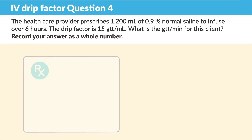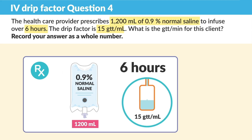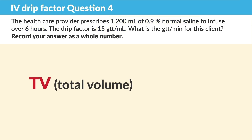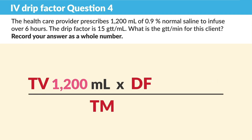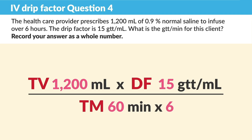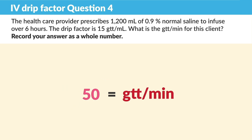Question number four: the healthcare provider prescribes 1,200 mLs of normal saline to infuse over six hours — key term, six hours is not 60 minutes. What is the drips per minute? Set up your formula: TV makes you deaf over time. Total volume is 1,200, drips are 15, but the time is six hours, so we do 60 minutes times six. Now multiply across both top and bottom: we get 18,000 over 360, then divide, and we get 50. The answer is 50 drips per minute.